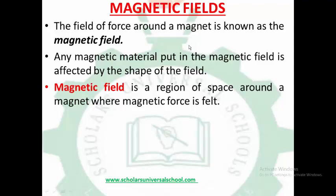You will notice that if you put a magnet at a point far from another magnet, there is no force. But when you move it closer to the magnet, you notice that there is a force around the magnet. This force is known as the magnetic field. It is invisible. Any magnetic material put in the magnetic field is affected by the shape of the field.